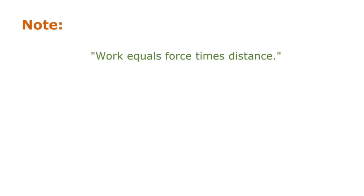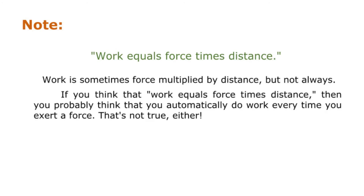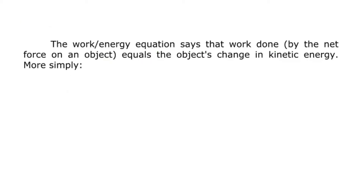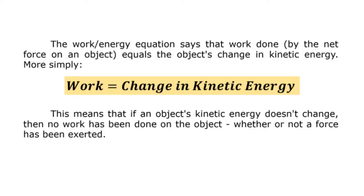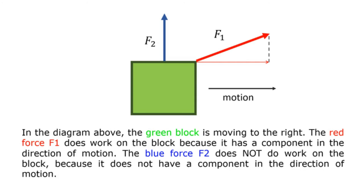Important note: work equals force times distance only sometimes — not always. The work-energy equation says that work done by the net force on an object equals the object's change in kinetic energy. More simply: work equals change in kinetic energy. This means that if an object's kinetic energy doesn't change, then no work has been done on the object. In the diagram, the green block is moving to the right. The red force F1 does work on the block because it has a component in the direction of motion. The blue force F2 does not do work on the block because it does not have a component in the direction of motion.